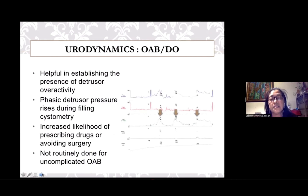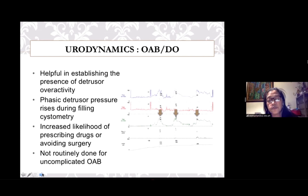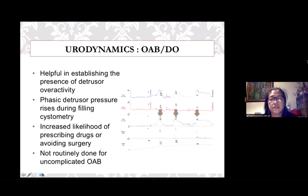In the context of OAB and detrusor overactivity, urodynamics is helpful in establishing the diagnosis by demonstrating phasic detrusor pressure rises during filling cystometry. Trials looking into the impact of urodynamics among women with OAB showed it led to an increased likelihood of prescribing drugs and avoiding surgery, but did not significantly improve treatment outcomes. Hence, it is not recommended as a routine test for women with uncomplicated overactive bladder.